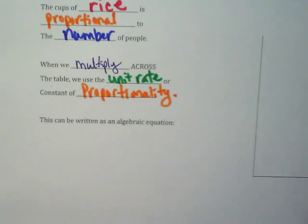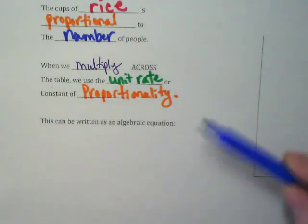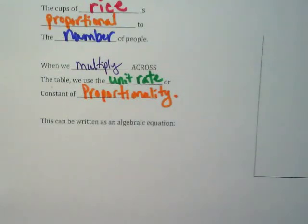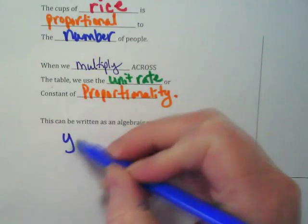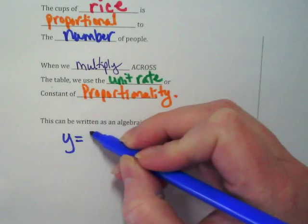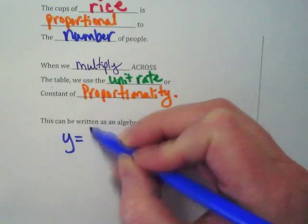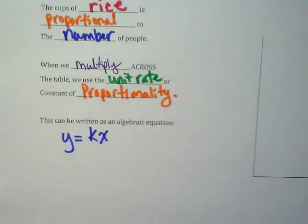We're going to come down to the very bottom where it says this can be written as an algebraic expression or equation, and I would like you to have the blue pen ready. Thinking back to our flow cab clown video, what is our equation? Y equals... Well, the rule that we're working with is 3x, but the overall rule is y equals kx. And we'll come back to writing the rule for our table. But overall, we can write this as an algebraic equation: It's y equals kx.